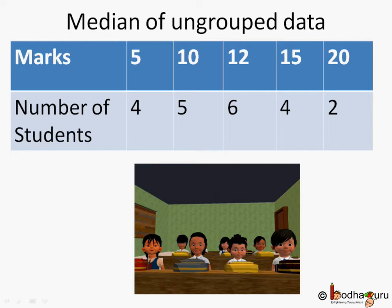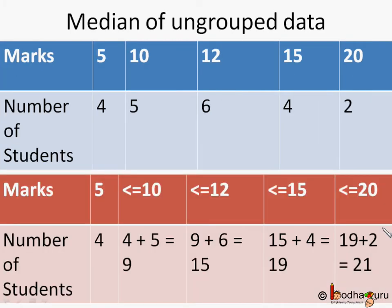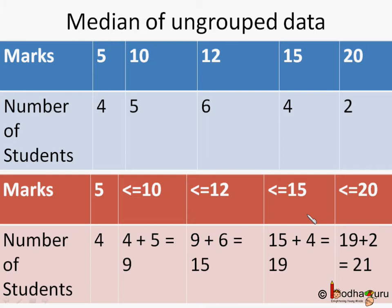No. So we have to make some changes in the table. Let's rewrite it like this. 4 students got 5 marks. 4 plus 5, that is 9 students got less than or equal to 10 marks. 9 plus 6, that is 15 students got marks less than or equal to 12. 15 plus 4, equal to 19 students got marks less than or equal to 15. 19 plus 2, which is 21 students, got less than or equal to 20 marks.